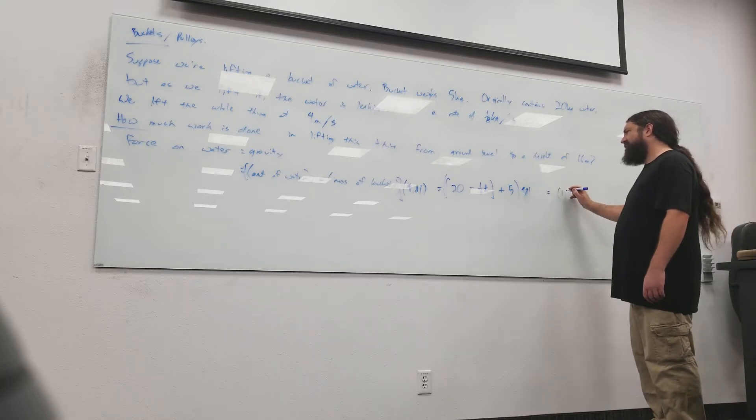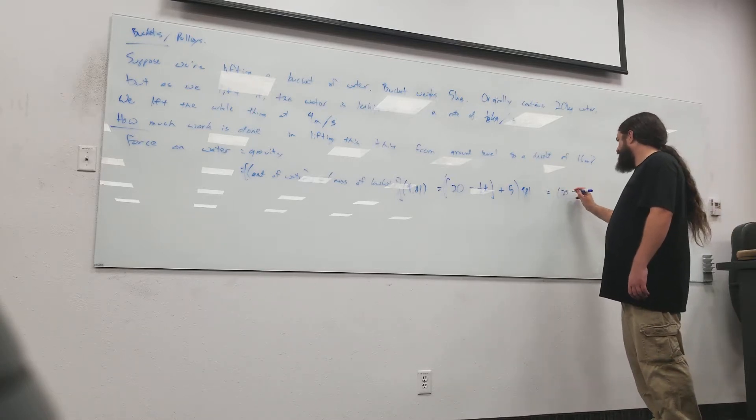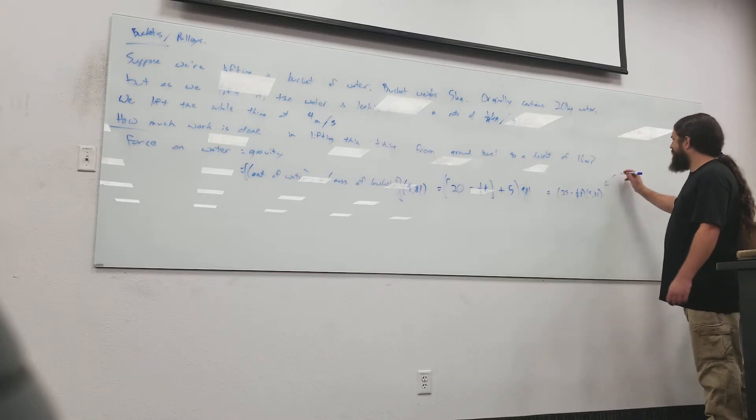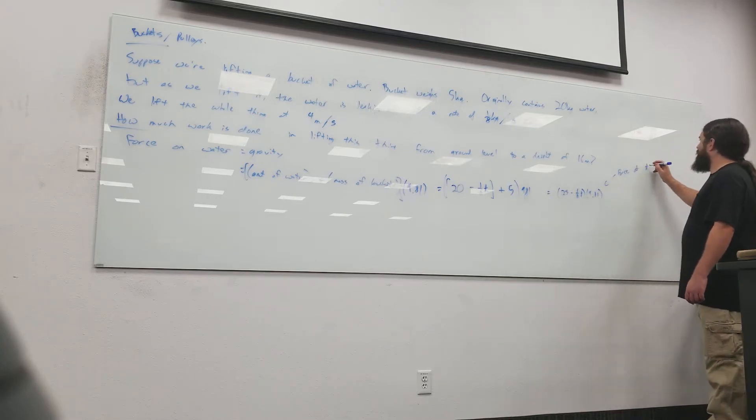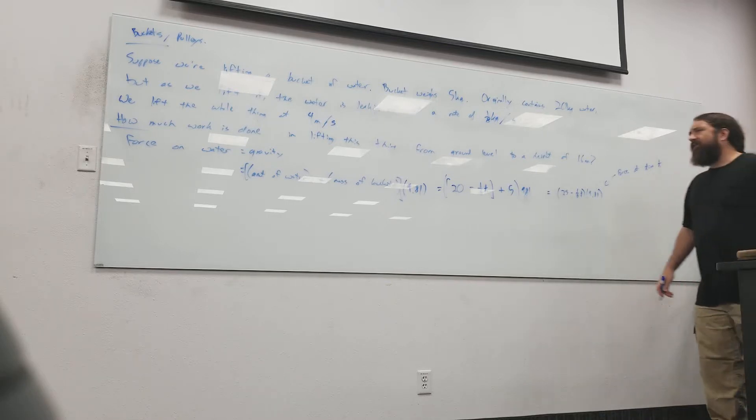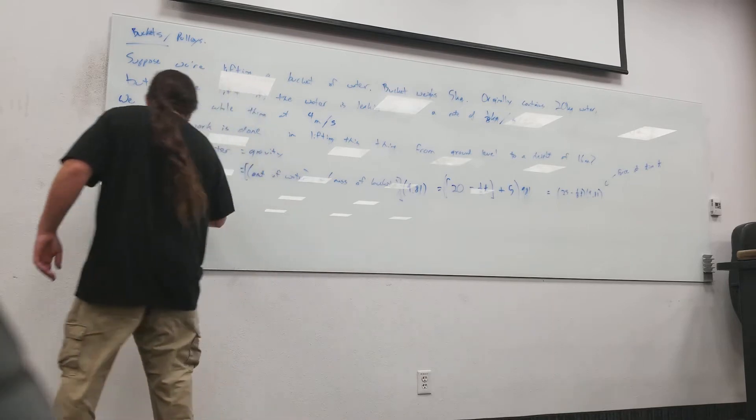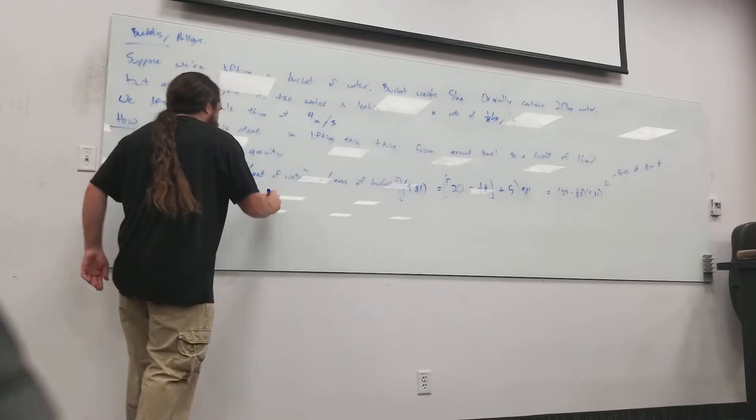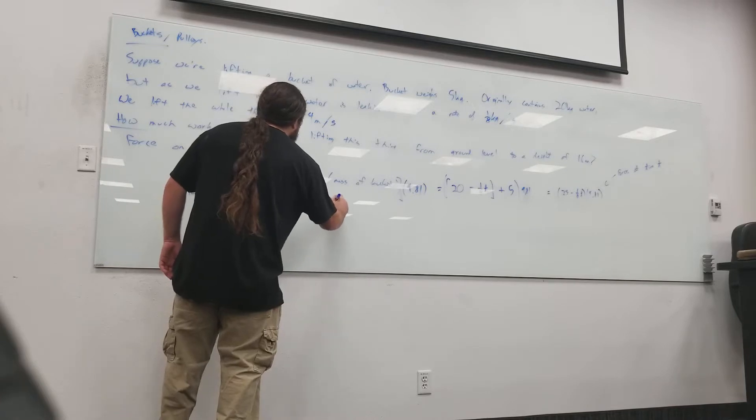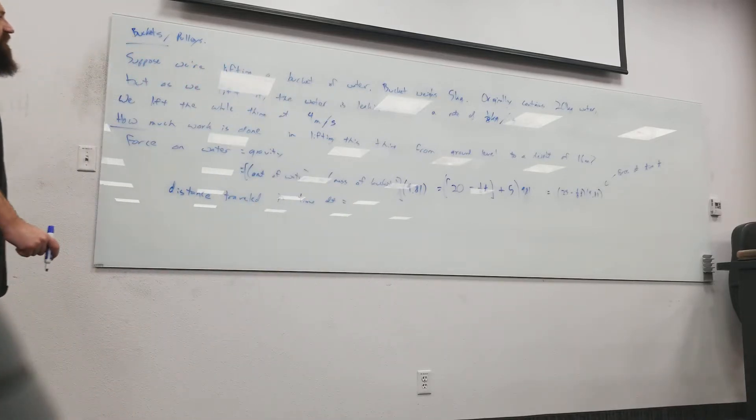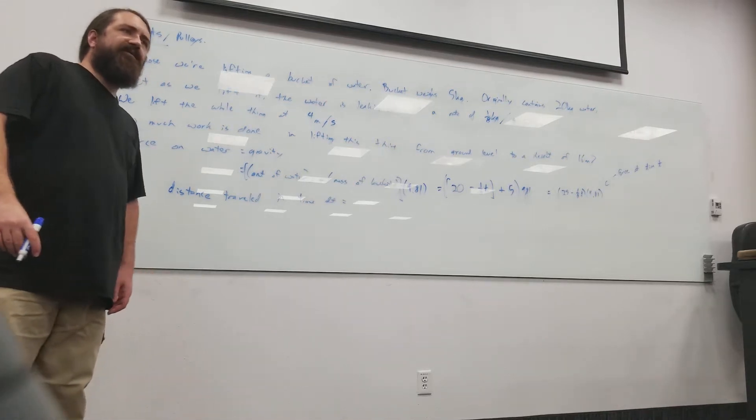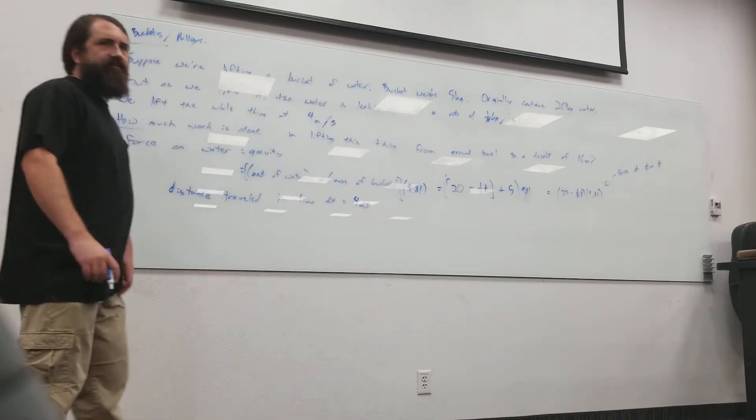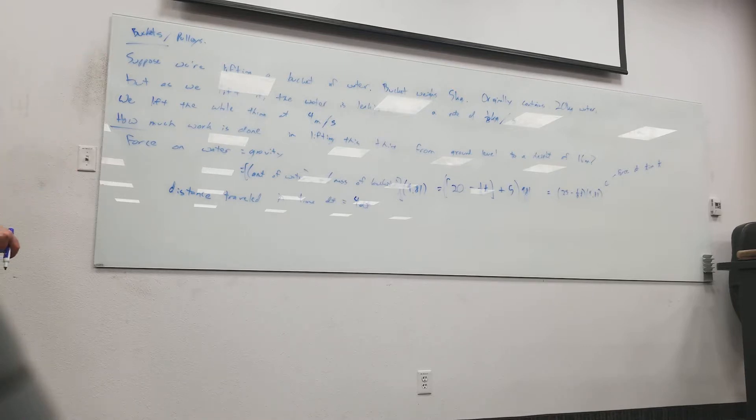So, I'm looking at 25 minus one-eighth T times 9.81. So that's the amount of force at time T, right? Because that's what's pulling down on it, it's just gravity. How far does it travel from time T to time T plus DT? Well, we are going, what, four meters per second? And so, if I travel for DT seconds, it's actually going to travel a distance of four times DT, right? Just because it'll be the time times four will give you the distance.